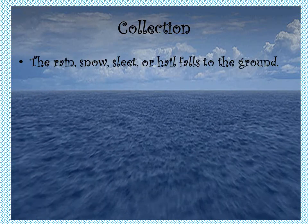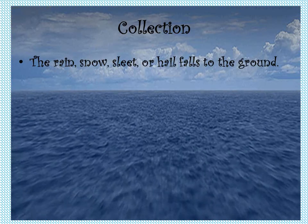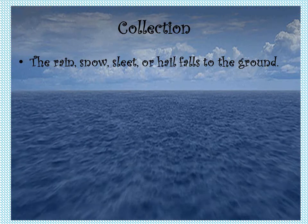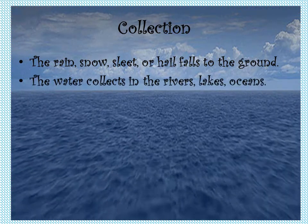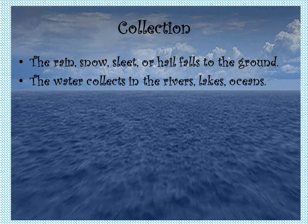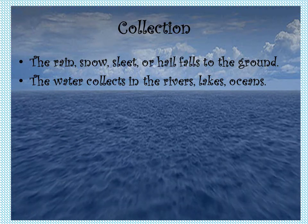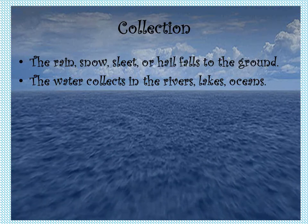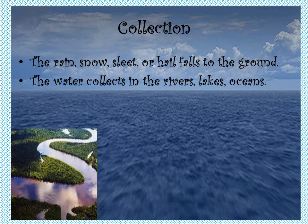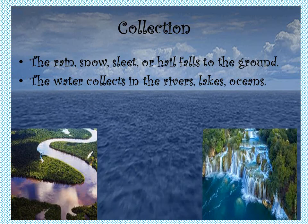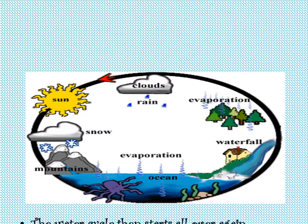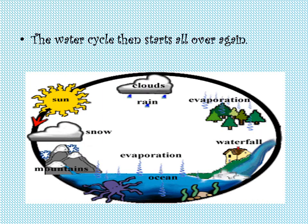The rain, snow, sleet or hail falls to the ground. The water collects in the rivers, lakes and oceans. The water cycle then starts all over again.